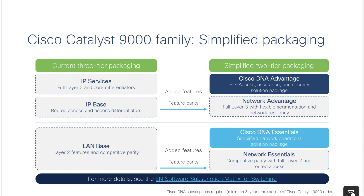Now they have changed to something called Network Essential, which is the comparison to LAN Base — meaning a layer 2 switch — and then for the layer 3 versions they have something called Network Advantaged. Compared to before where everything was perpetual, now you need to have the perpetual version — either Network Essential or Network Advantaged — and on top of this you need to add a subscription-based module, with a minimum of three years when you buy it.